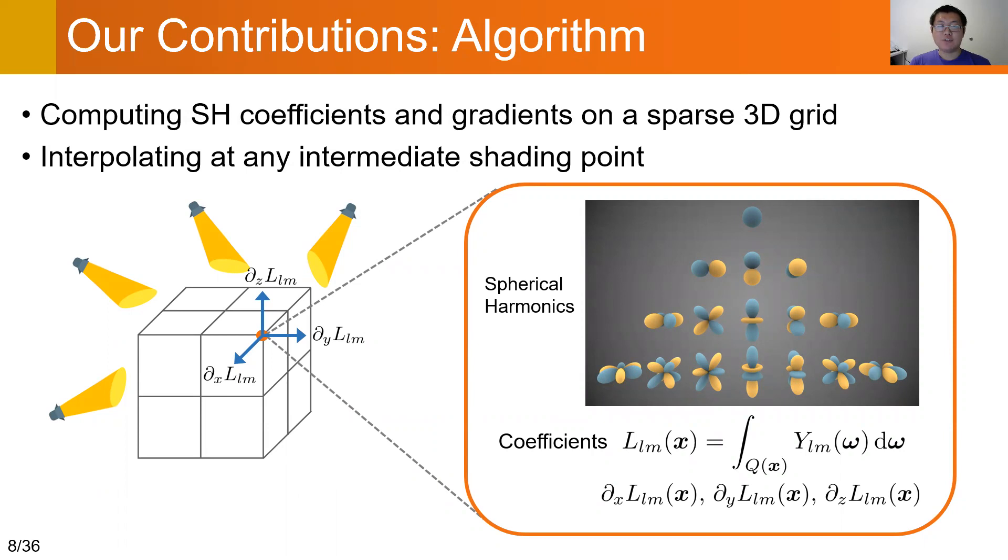For any intermediate shading points, we can interpolate SH lighting coefficients from the 8 nearest grid points, using an accurate tricubic Hermite interpolation.